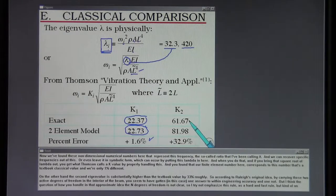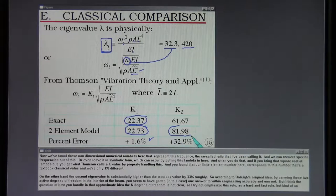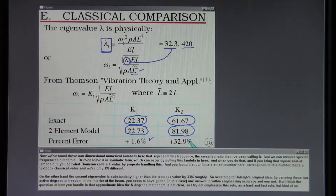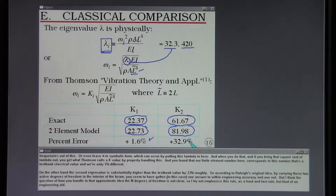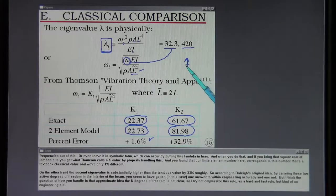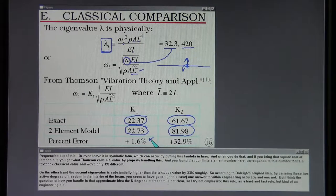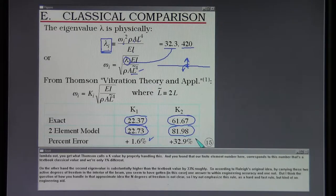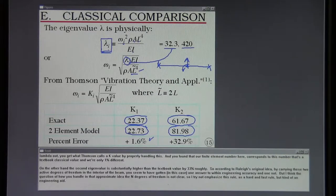On the other hand the second eigenvalue is substantially higher than the textbook value by 33% roughly. According to Rayleigh's original idea by carrying these two active degrees of freedom in the interior of the beam, we seem to have gotten one answer to within engineering accuracy and one not. The question of how you handle the end degrees of freedom is not clear. So I tried not to emphasize this rule as a hard and fast rule but kind of an engineering aid.